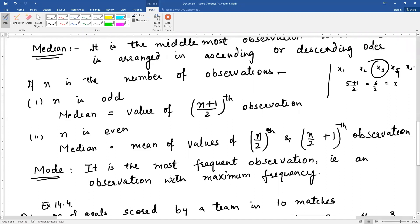Now if n is even, then two observations will come in the middle. If it's an even number, then what will be the median? Mean of the values of n/2th and (n/2 + 1)th observations. If there are even observations, then the two middle observations after arranging in ascending order, we have to find the mean of those two observations. Mean means add those two and divide by 2.